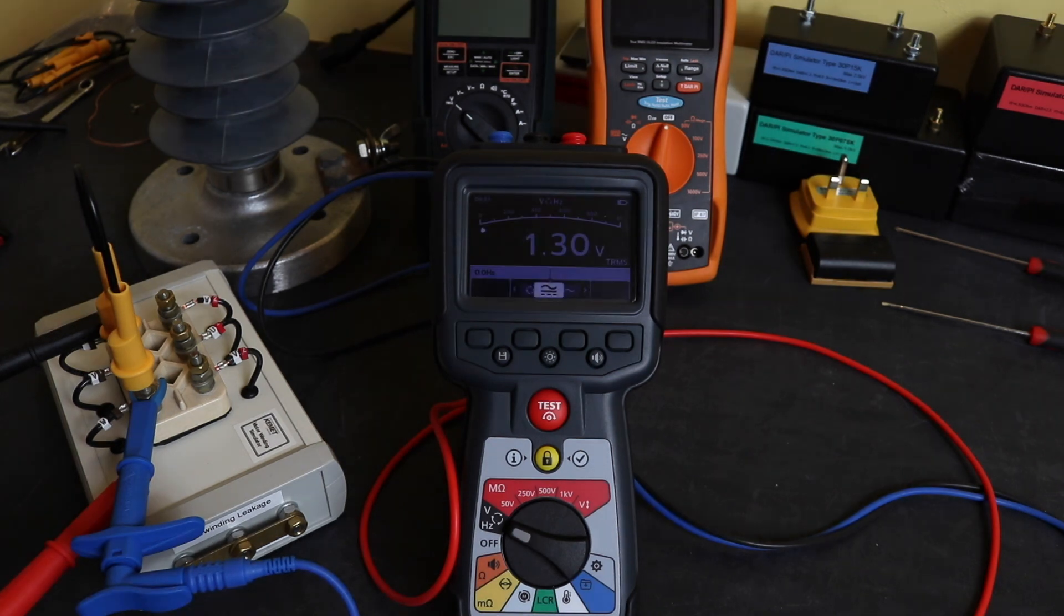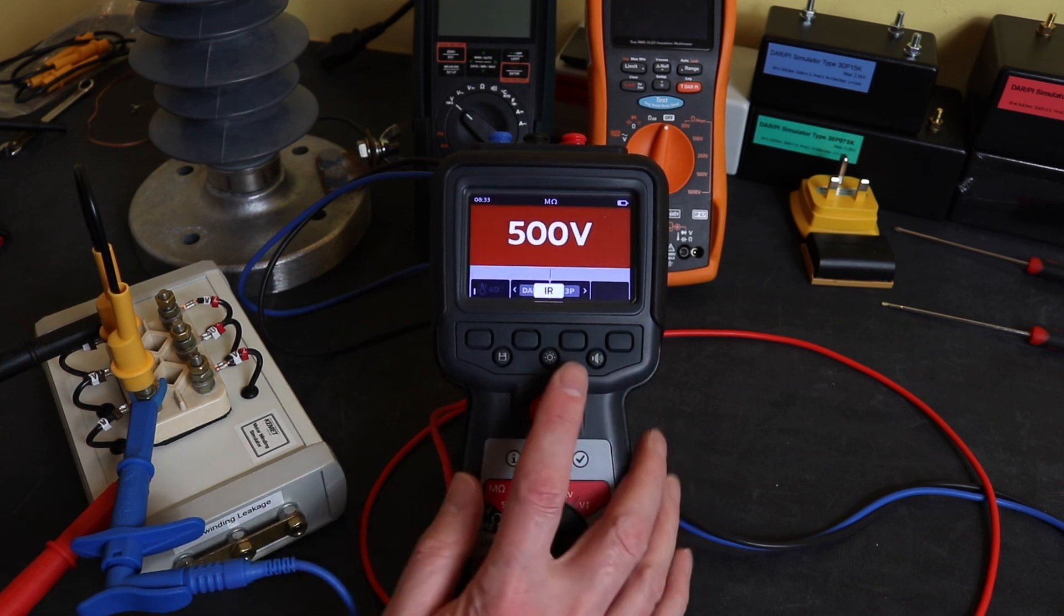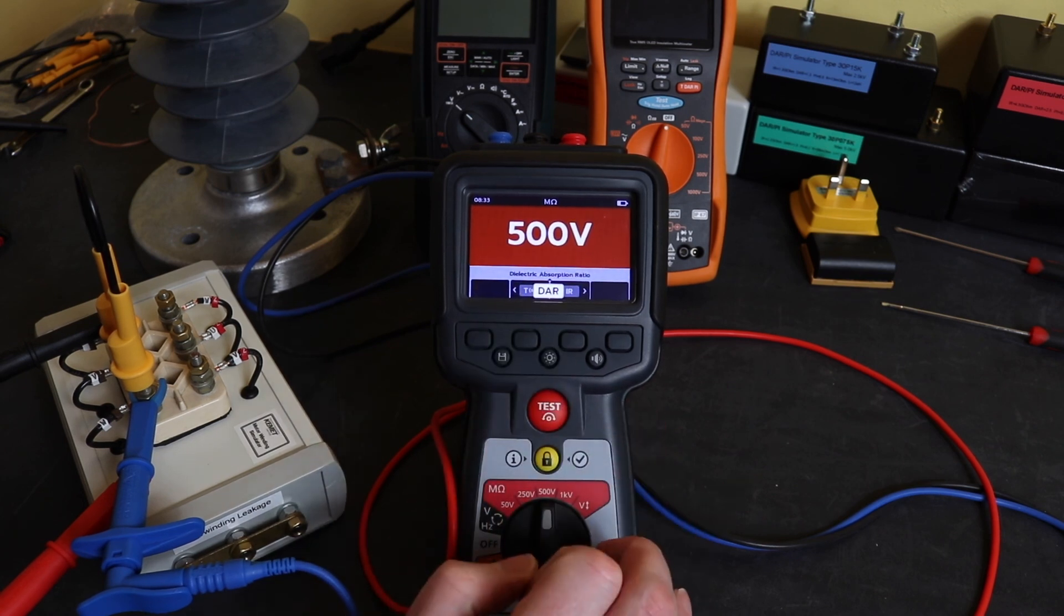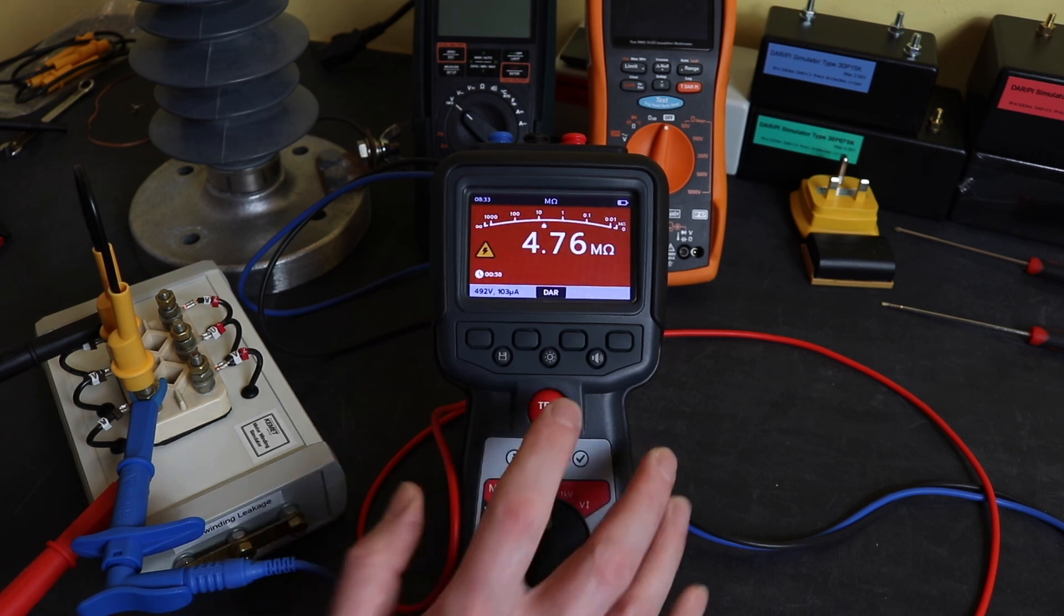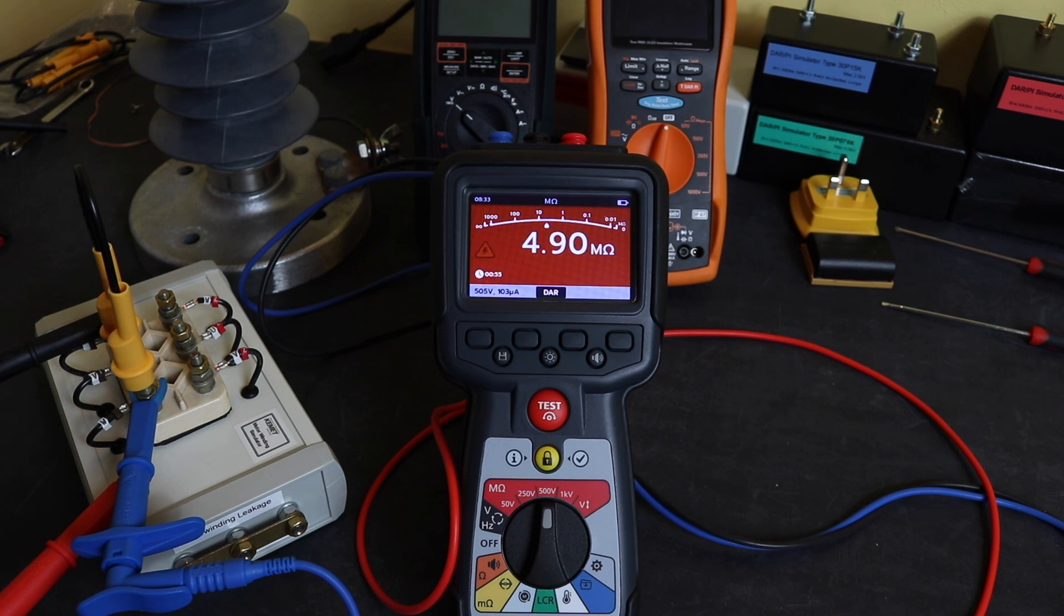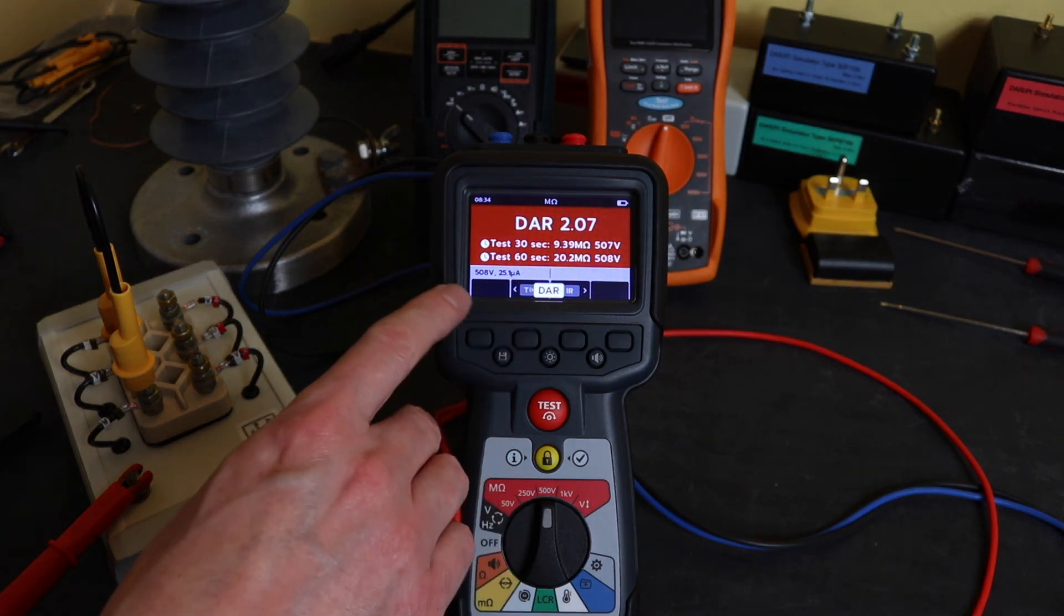Now I will get a true resistance reading of this one phase to earth and I'm actually expecting it to be higher than the previous reading. We'll go down to DAR again, 500 volts, the same test just using the guard terminal. Go button and we'll leave it running for one minute. I'll speed this one up.